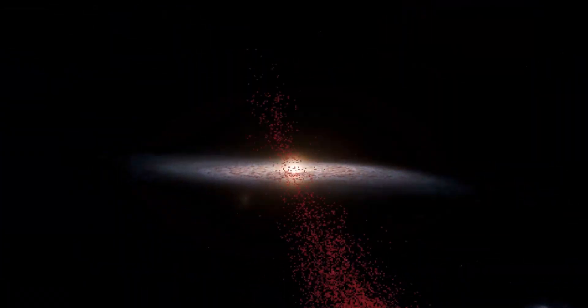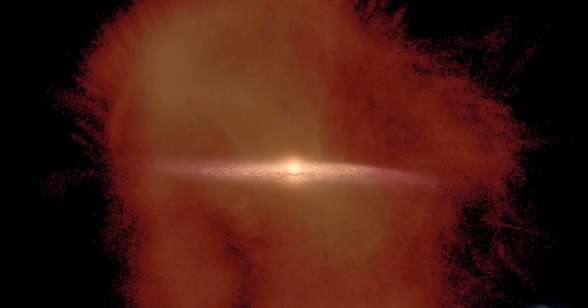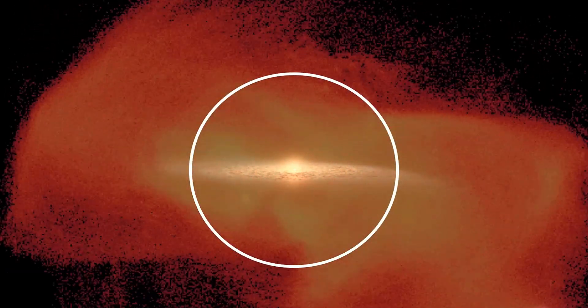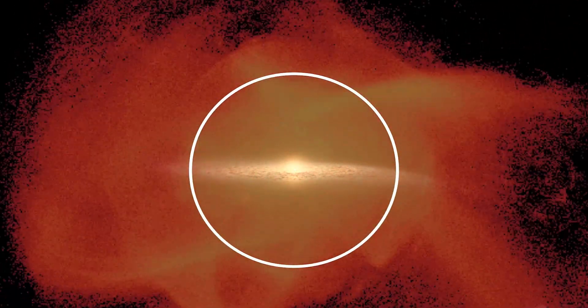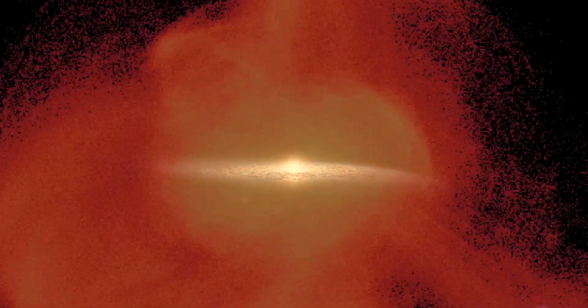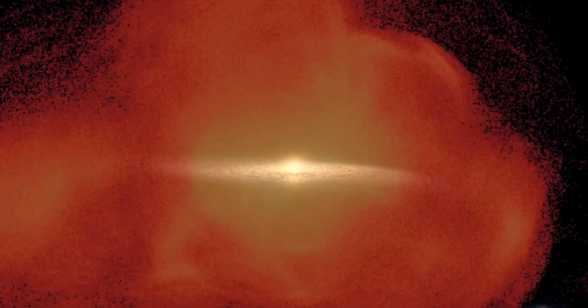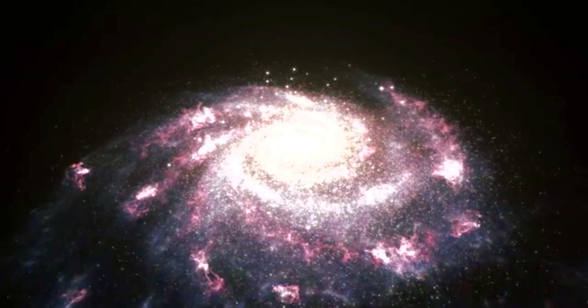All of this points to a simple truth. The Milky Way is not calm. It's not stable. It's a galaxy shaped by chaos, built through collisions, shaken by neighbors, and still evolving. And here's the mind-blowing part. We didn't know any of this until now. This map, this release, has changed our understanding of where we live.